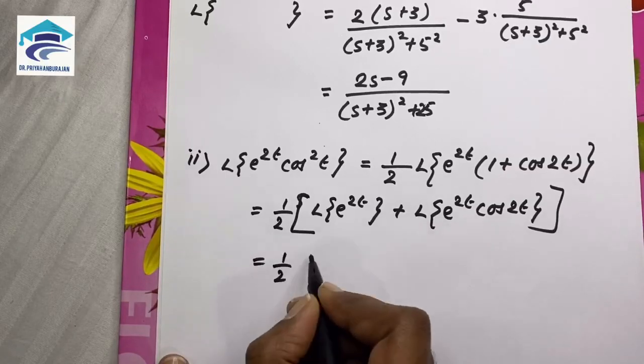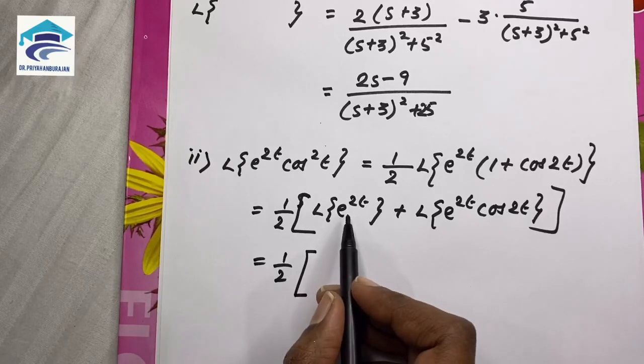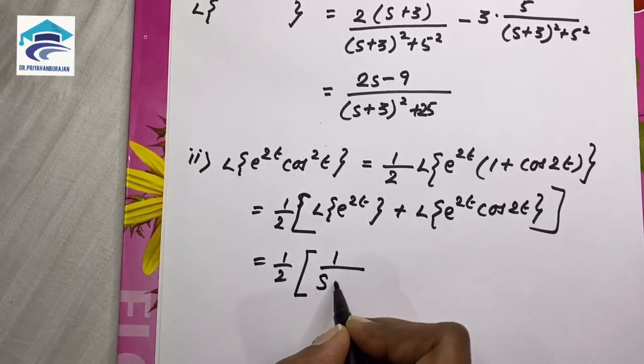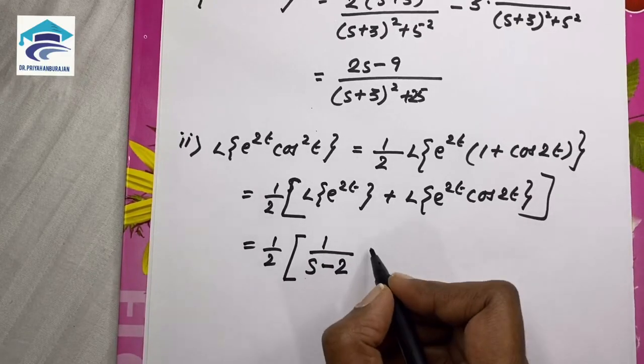This is equal to 1 by 2 into... what is L of e power 2t? This will become 1 by s minus a. A here is 2, so it is 1 by s minus 2 plus...